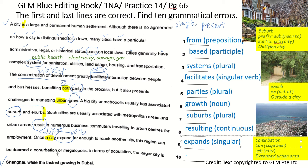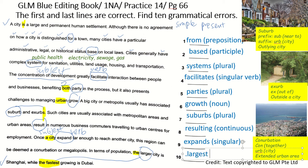This region can be deemed a conurbation or megalopolis. In terms of population, the largest city is Shanghai, while the fastest growing is Dubai. Notice the error: 'the larger' should be 'the largest'. The word 'the' tells you it should be superlative, so it should be 'largest'. There is a comparison being made between cities in the world — Shanghai and Dubai. That is a superlative.